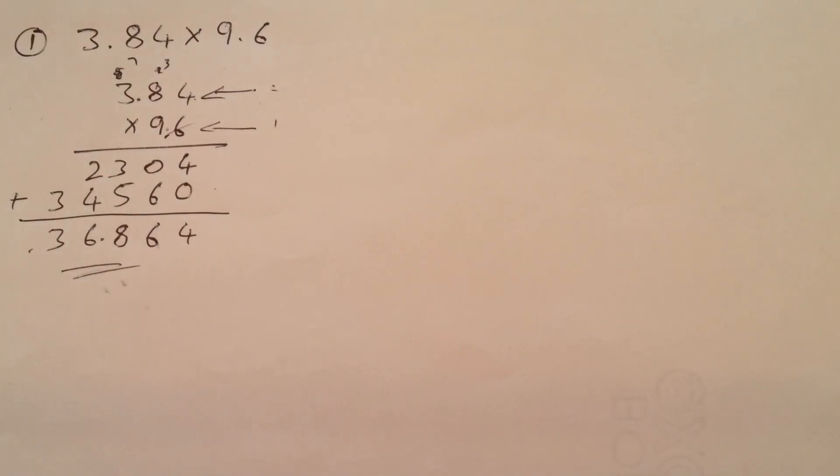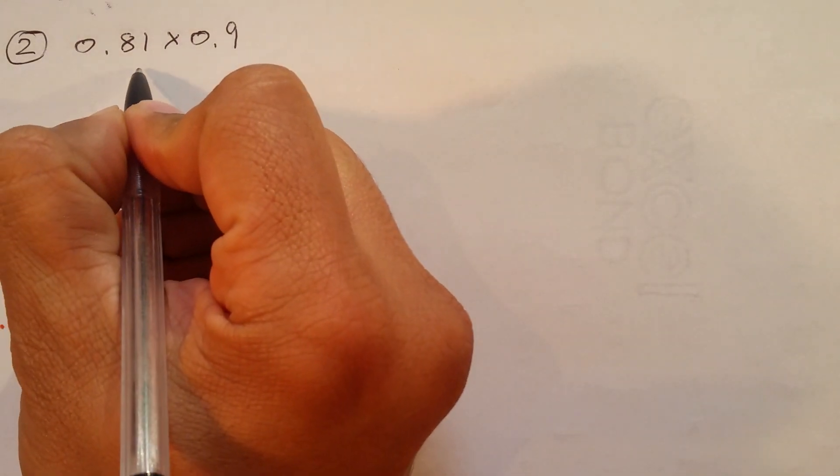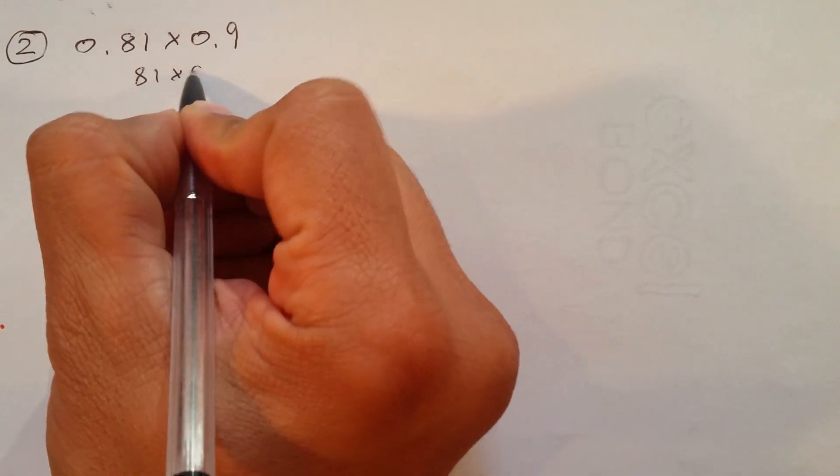Don't bring the decimal. Solve it and put it back. Let's move on to the second question now. Second one is 0.81 times 0.9. As we discussed earlier, we ignore the decimal.